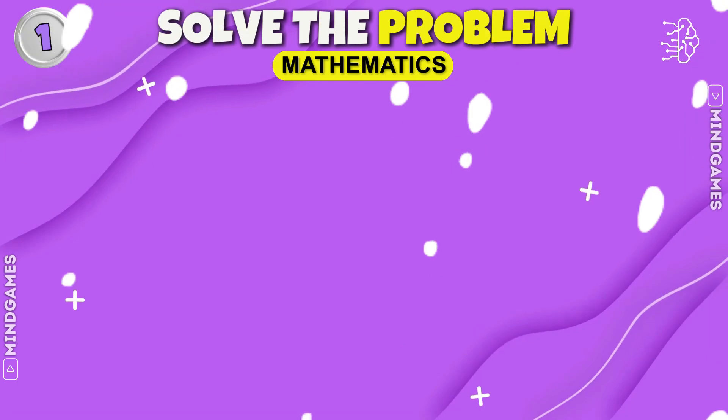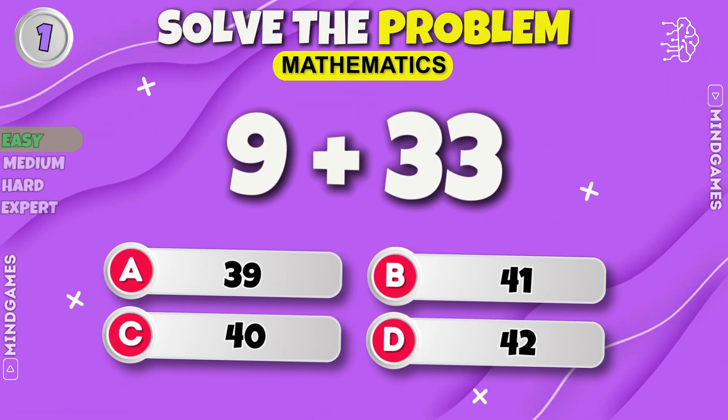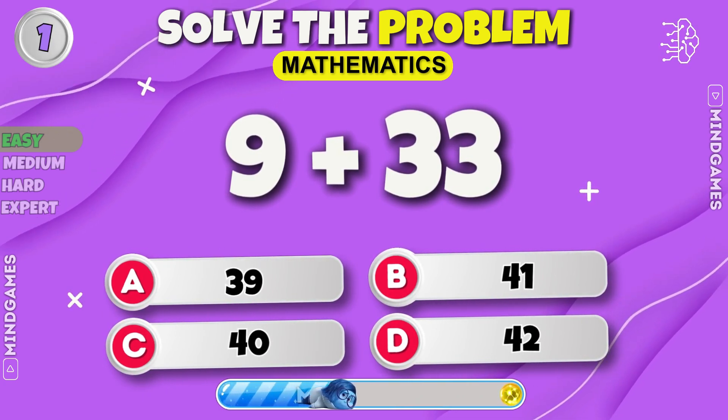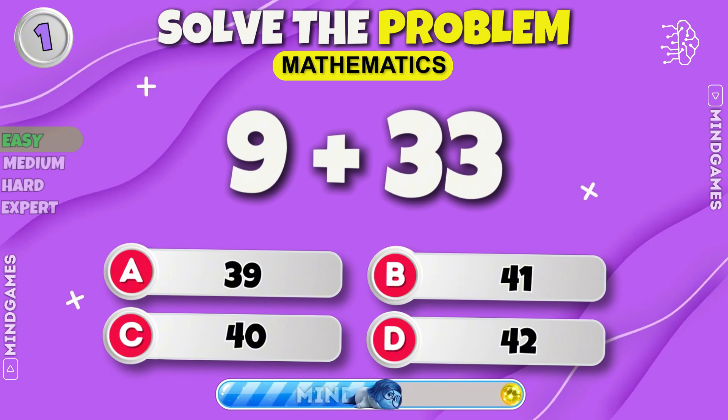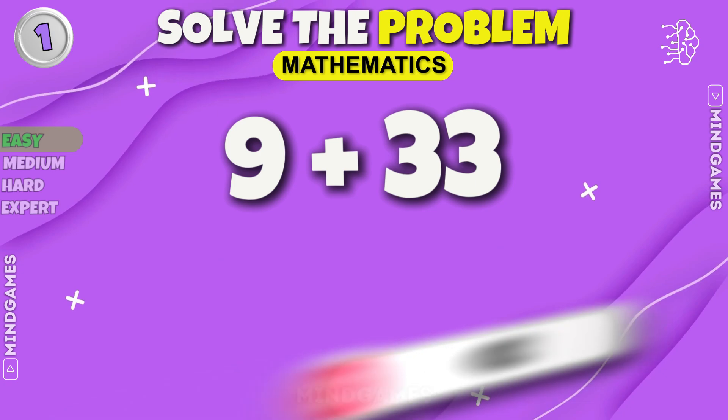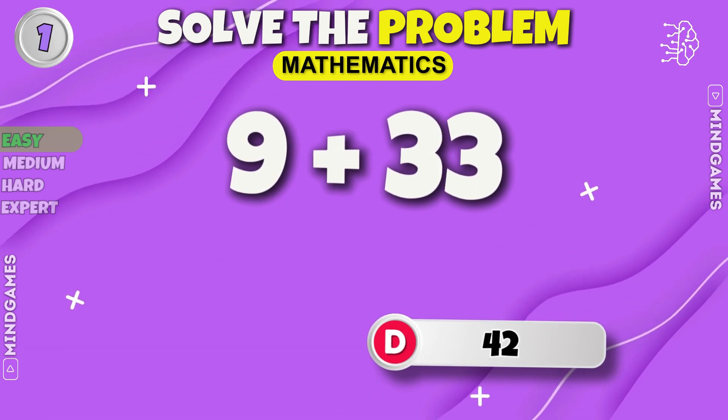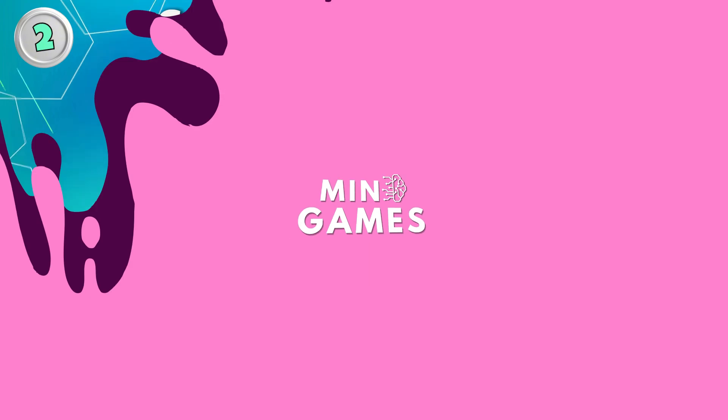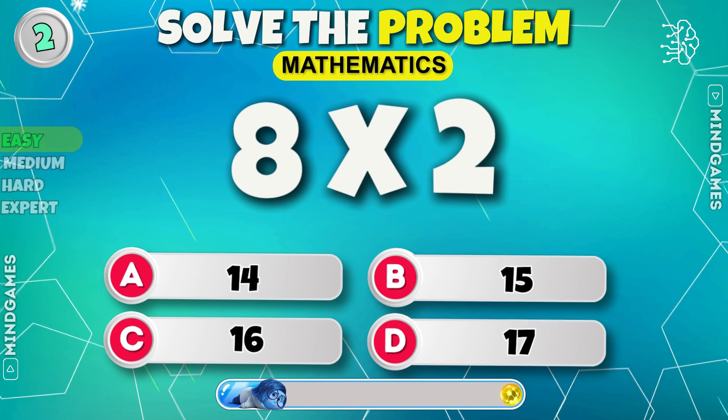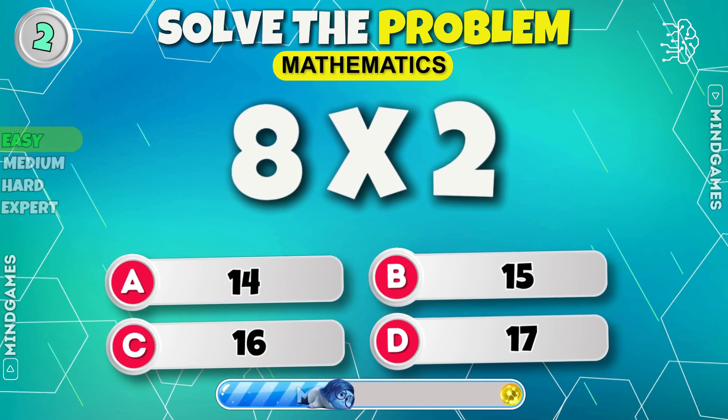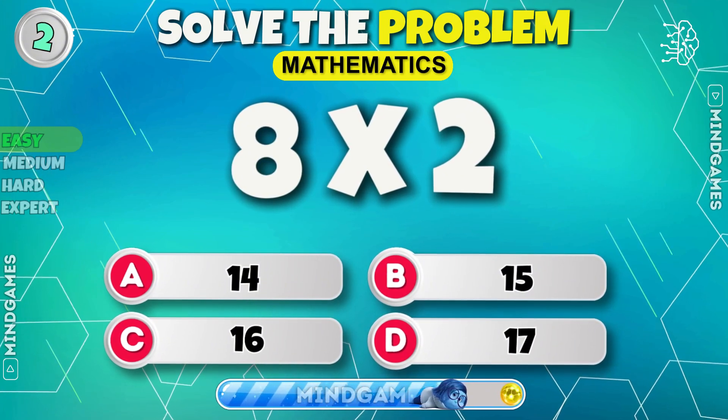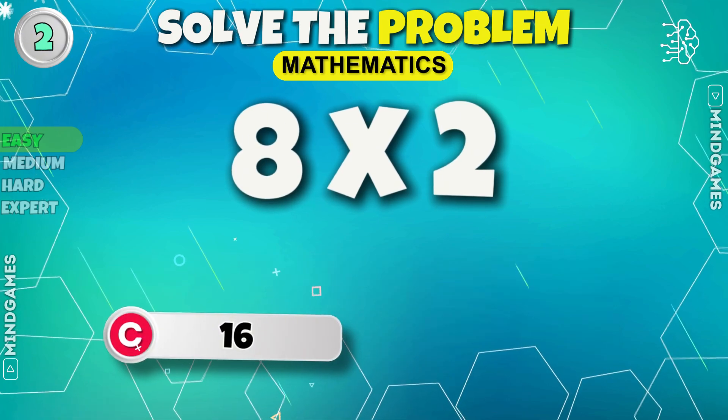Easy level. What's the result of 9 plus 33? The answer is 42. What is 8 into 2? Time is ticking. It's 16.